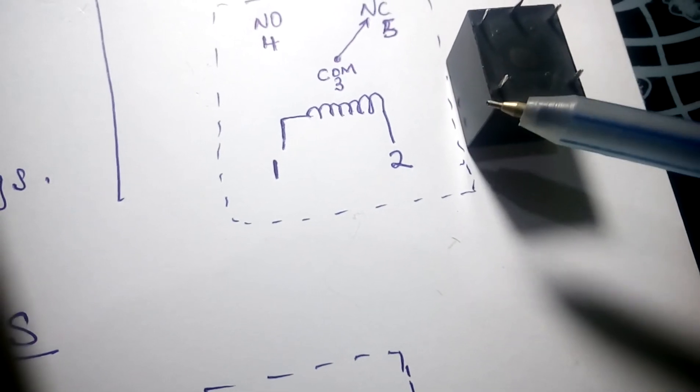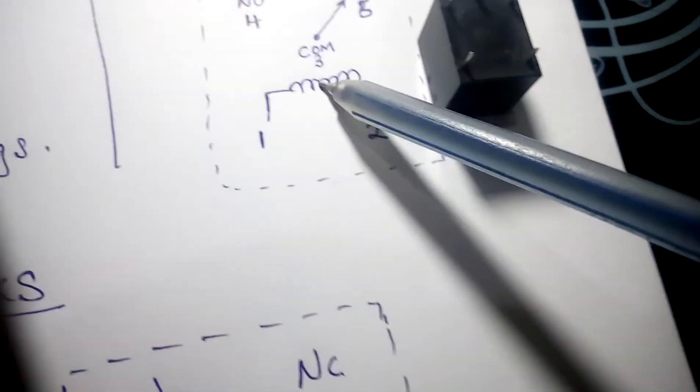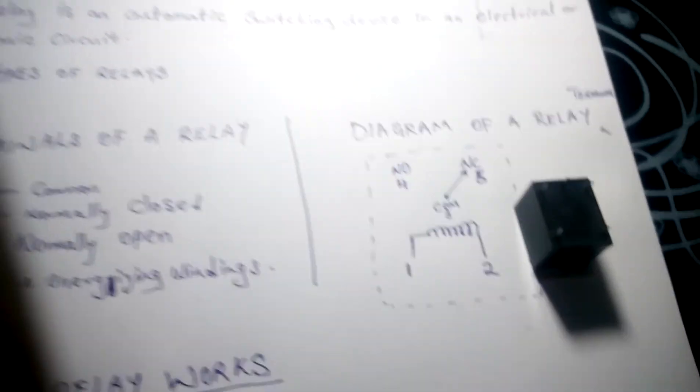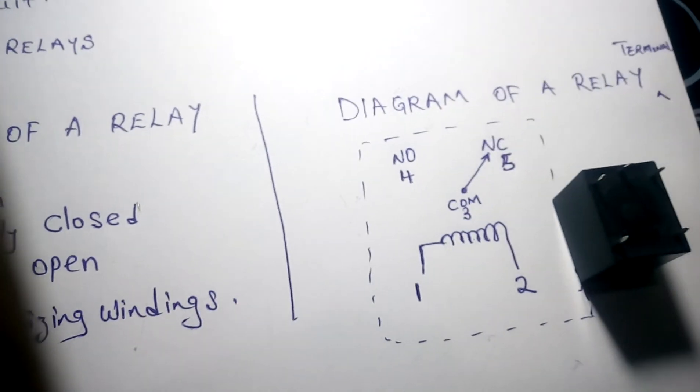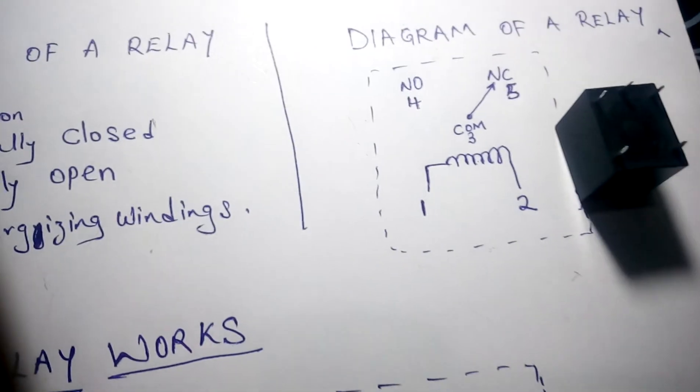Now these two pins here are pin one and two. I call them P1 and P2, and they are coils. This is the common, this is normally closed, and this is normally open. We'll actually confirm that in subsequent videos with our electronic meters.